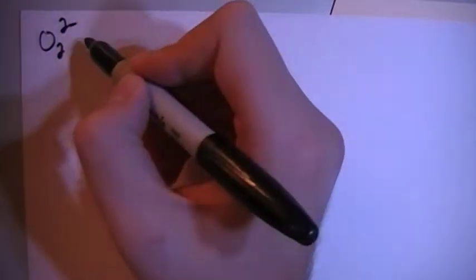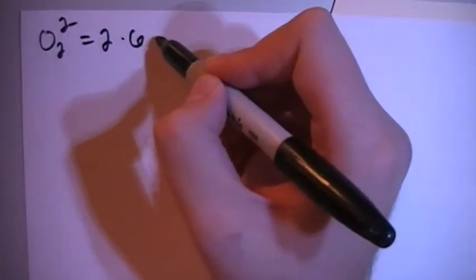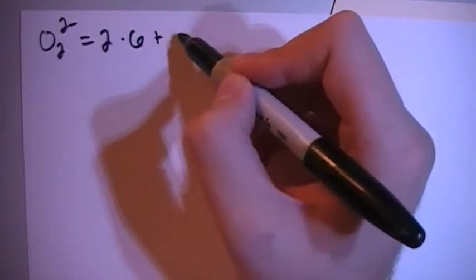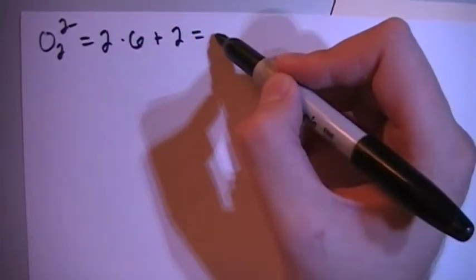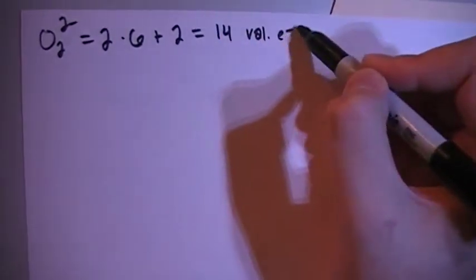Peroxide is going to be O2 with a negative 2 charge. That's going to give us 2 oxygens, each with 6 valence electrons, plus 2 more electrons for the minus 2 charge for an overall total of 14 valence electrons.